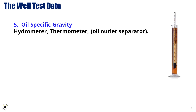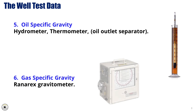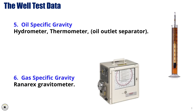5. Oil Specific Gravity — measured using a hydrometer and a thermometer at the oil outlet separator to determine the oil's density relative to water. The hydrometer provides a reading based on the buoyancy principle, while the thermometer ensures the temperature is known, as specific gravity is temperature-dependent. 6. Gas Specific Gravity — typically measured using a Ronorex gravitometer, a device designed to determine the density of a gas relative to air, crucial for analyzing the composition and properties of produced gas.